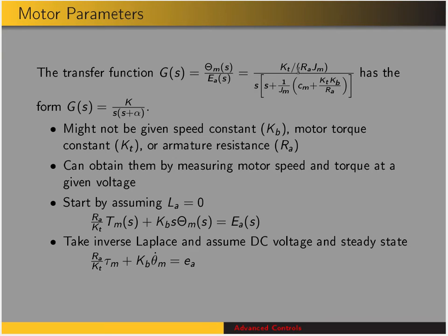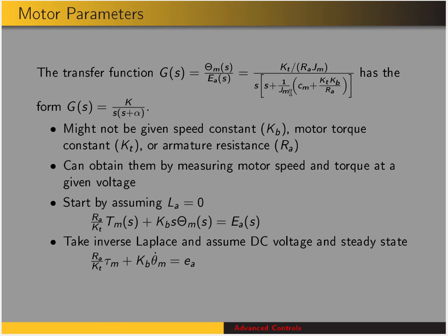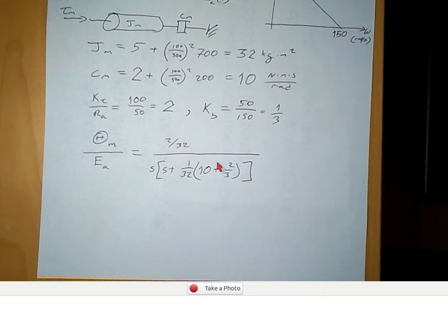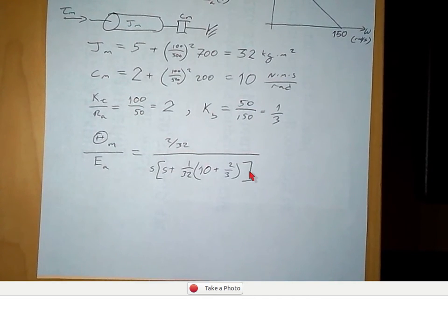KT/RA was 2, and 1/JM is 1/32, so our numerator is 2/32. For the denominator, 1/JM is again 1/32, CM is 10, KT/RA is 2, and KB is one-third — so the bracket becomes 10 plus two-thirds.